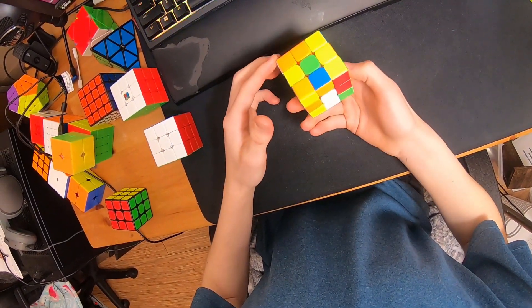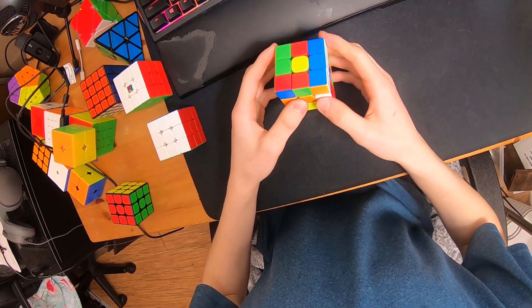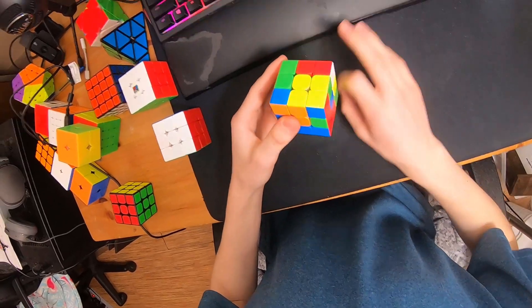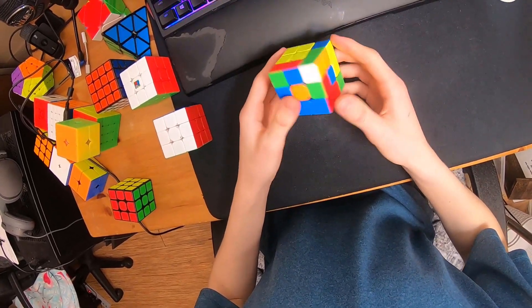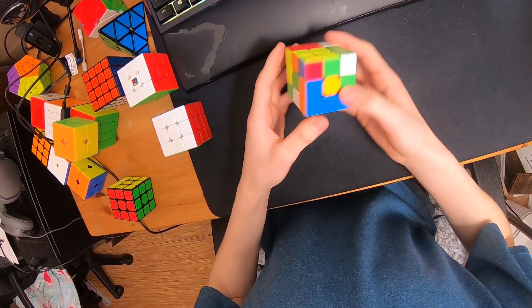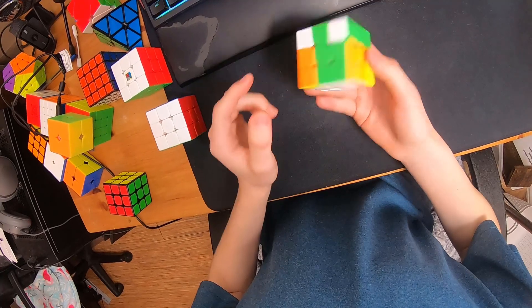Second scramble, this was a white x-cross. I used this free pair, and then this, so I did d, r'f, and then u2, so I inserted a lot of the stuff, and then I did u2, inserted this.